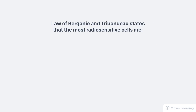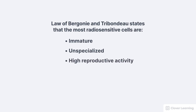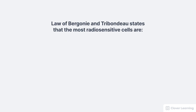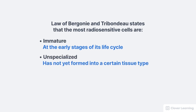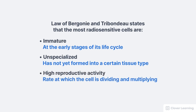The radiosensitivity of tissue is determined in part by the law of Bergonié and Tribondeau, which says the most radiosensitive cells are immature, unspecialized (meaning undifferentiated), and have a high reproductive activity (meaning they are rapidly dividing). An immature cell is one at the early stages of its life cycle. An unspecialized cell is one not yet formed into a certain tissue type. High reproductive activity refers to the rate at which the cell is dividing and multiplying.